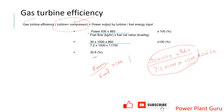Your turbine open cycle efficiency is close to 30-point-something percent, equal to the number calculated. If you have any questions or doubts on this calculation, please ask in the comment section. In follow-up videos I'll create a cogen efficiency calculation, compressor efficiency calculation, and combined cycle efficiency and heat rate calculation. Thank you for watching.